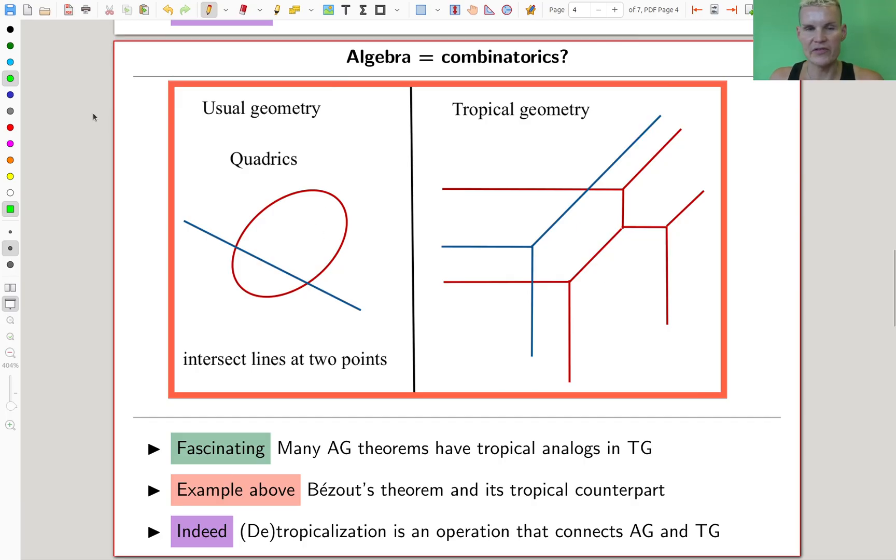And in tropical geometry here, you have a degree one polynomial in tropical geometry, or the zero set. And here you have the red thing is degree two. And they again intersect in two points. It's kind of the same type of theorem.